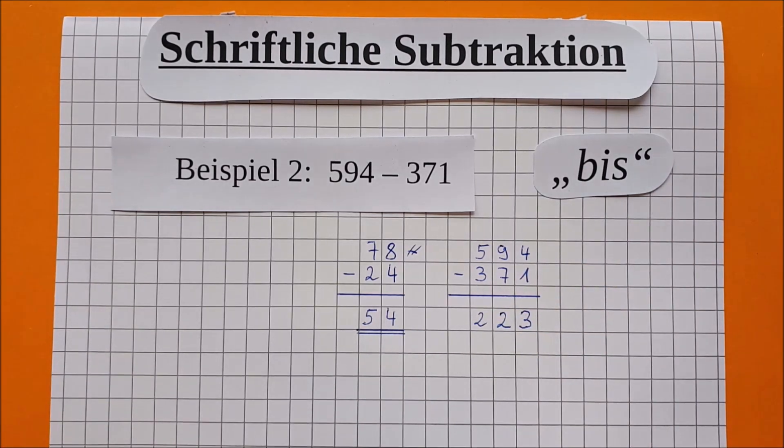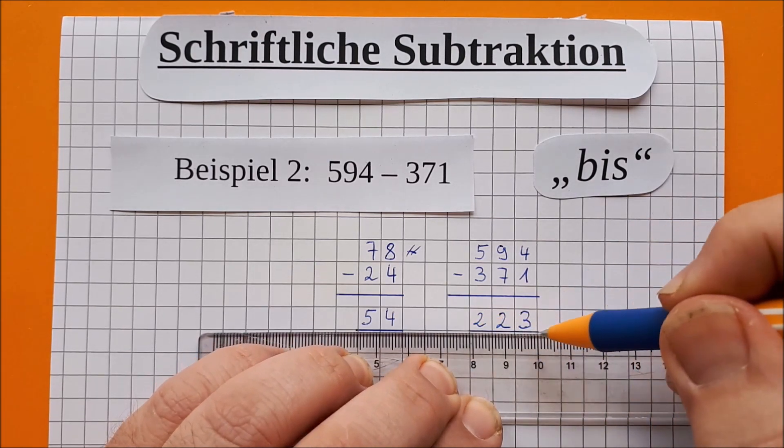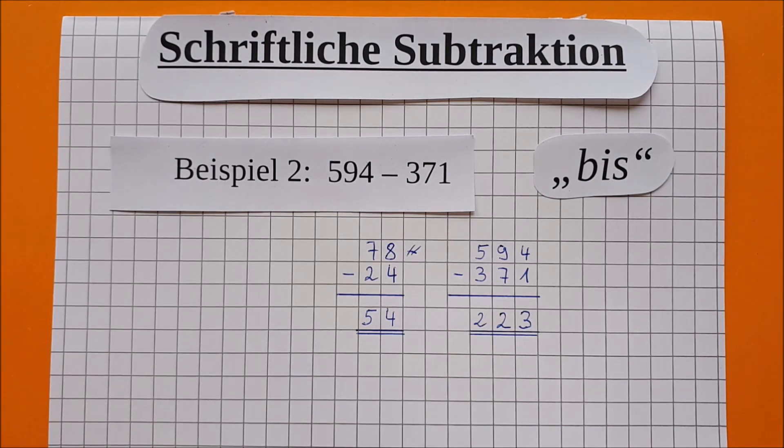Und ihr merkt, wir rechnen wieder im Zahlenraum der ersten Klasse. Doppelt unterstreichen. Und wir haben es geschafft. Das waren die ersten Beispiele.